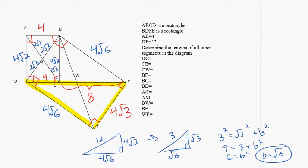Now we know the diagonals of a rectangle bisect each other. So we know that if DE was 12, this would have to be 6. DW was 6, but this part is already 4, so this has to be 2. This is going to be 6 and this is going to be 6.